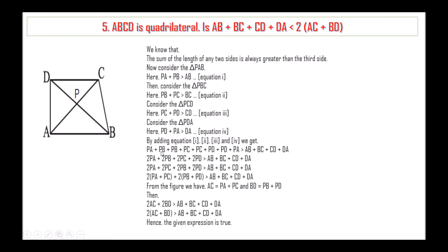We have 2PA, 2PB, 2PC and 2PD on the left side. Taking 2 out, we get 2(PA plus PC plus PB plus PD) greater than AB plus BC plus CD plus DA. So 2AC plus 2BD is greater than AB plus BC plus CD plus DA, which means 2(AC plus BD) is greater than AB plus BC plus CD plus DA. Hence the given expression is true.